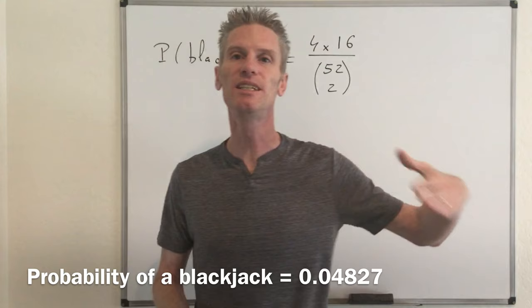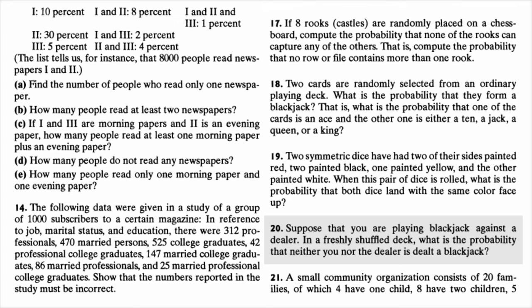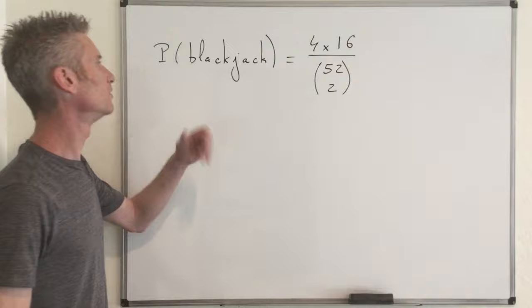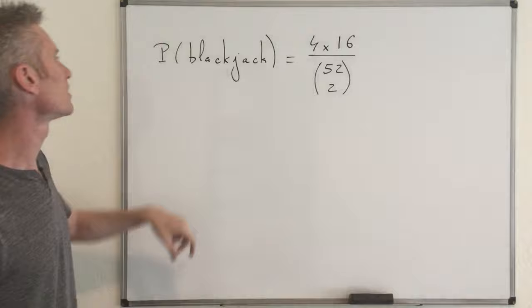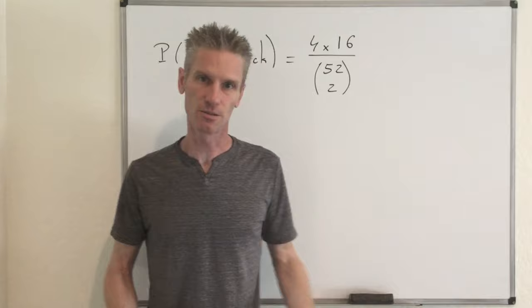Using a calculator, this probability is about 0.04827, meaning you get a blackjack a little less than 5% of the time. Now let's move on to problem 2.20. Here we assume there are two players, each taking two cards from the deck. The goal is to compute the probability that neither player has a blackjack. You might think at first that this is just the square of the probability of not having a blackjack — that's wrong.